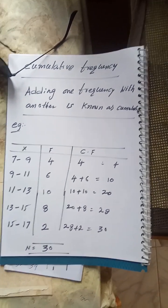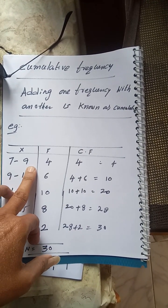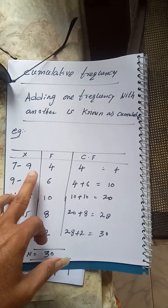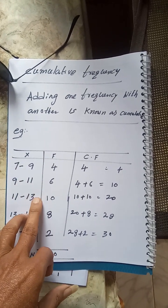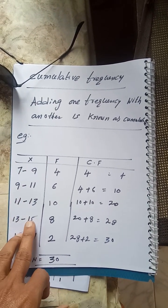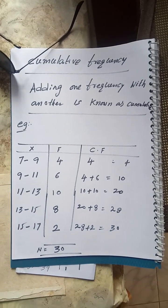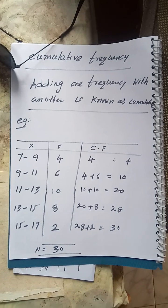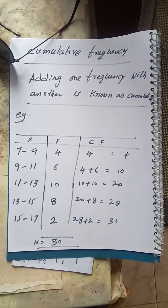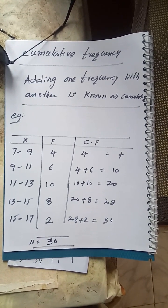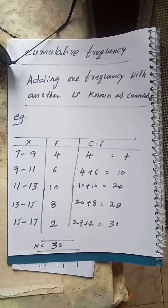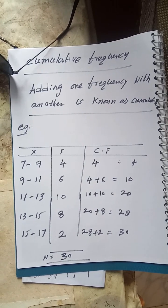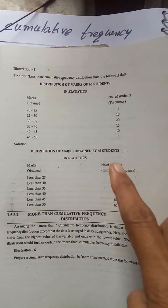This is continuous series with lower limit and upper limit. Let's say less than 9, less than 11, less than 15, less than 17. Or more than 7, more than 9, more than 11, more than 13, more than 15. This problem involves cumulative frequency.